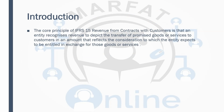IFRS 15 discusses how to record revenue. It tells you the five-step model — COPAR — to record the revenue. In addition to this, it also covers construction contracts. Although construction contracts have the same criteria as this five-step model, we are going to discuss that separately because in the F7 exam you have MCQs related to construction contracts.